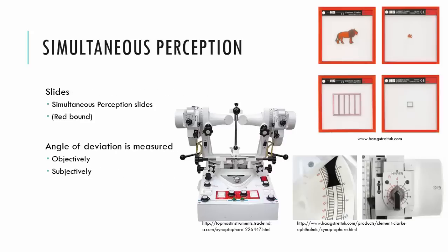Let's begin with grade 1, simultaneous perception. For this we use specific slides. They're usually red in colour, and what we see is that the slide that goes in front of one eye is completely different to that which will go in front of the other eye. But they are pairs. So here as an example we have a lion and a cage, and we'll be asking the patient to put the lion in the cage. Here we also have a fish and a fish tank, so we'll be asking the patient to put the fish in the tank. Whilst the images are completely different, they are paired in a way that you'll be able to ask a question of your patient in terms of superimposing those particular images.